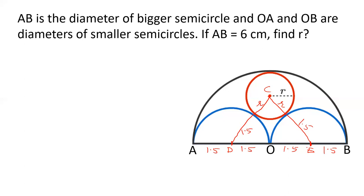If I draw a line from U to O, then this is an isosceles triangle because its two sides are equal. This line is perpendicular to here.